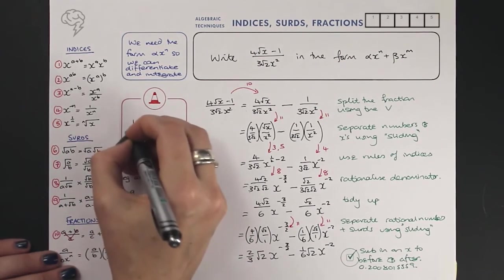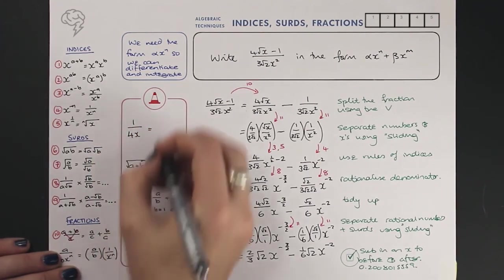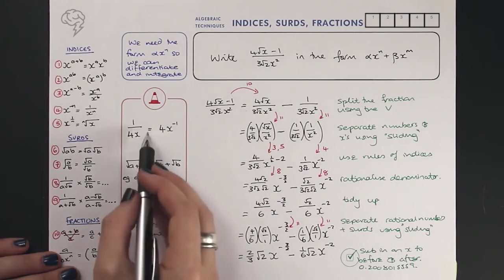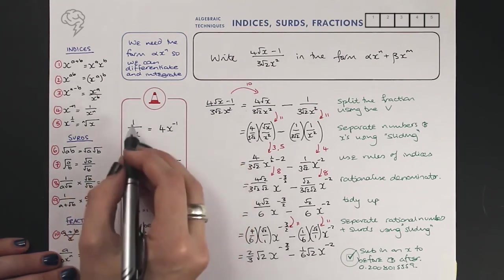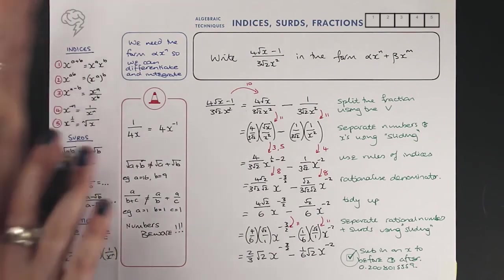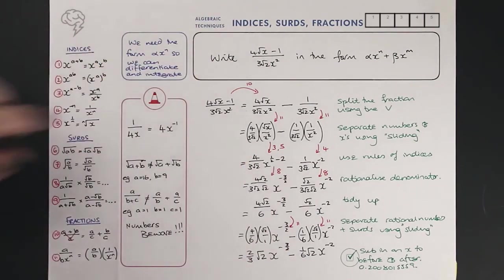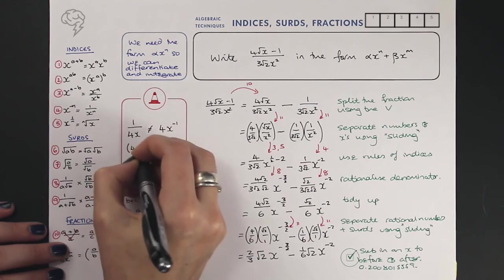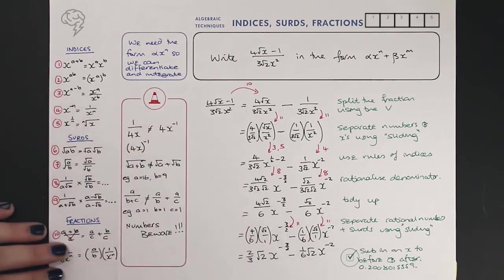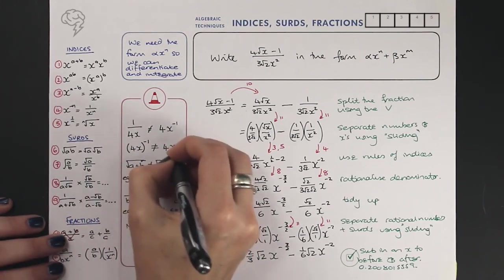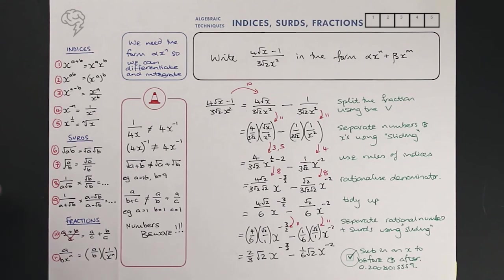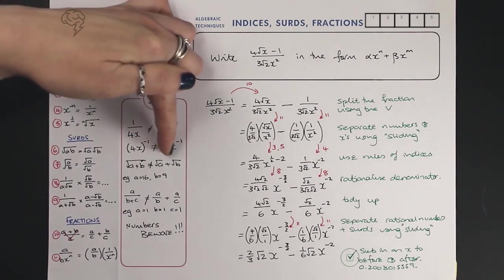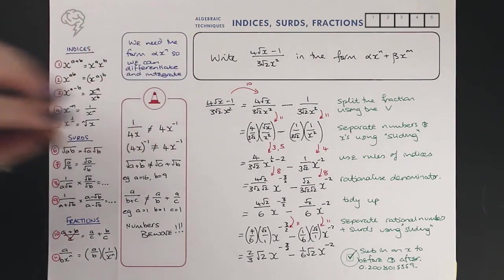There was one more thing I wanted to mention. This is a very common mistake: to say that 1 over 4x is 4x to the minus 1. It kind of is 4x to the minus 1, but it isn't 4x to the minus 1. What this is, using the sliding, if you slide those numbers and slide those x's, is a quarter, 1 over x, not 4, no. The mistake that's happened here is the invisible brackets. 4x is all to the minus 1. 4x to the minus 1 is not 4x to the minus 1. You'll hear me say that a lot. 2x squared is not 2x squared. 2x in brackets squared is not 2x squared. So this use of brackets is really important in maths.